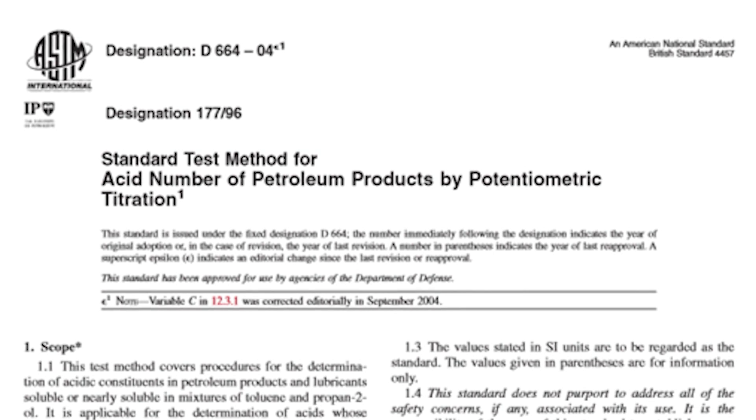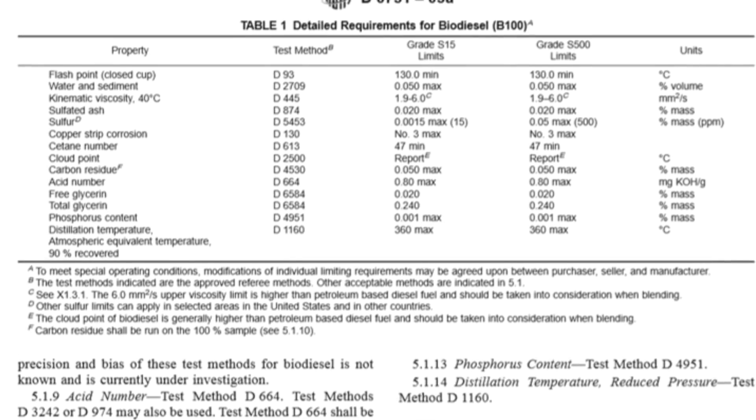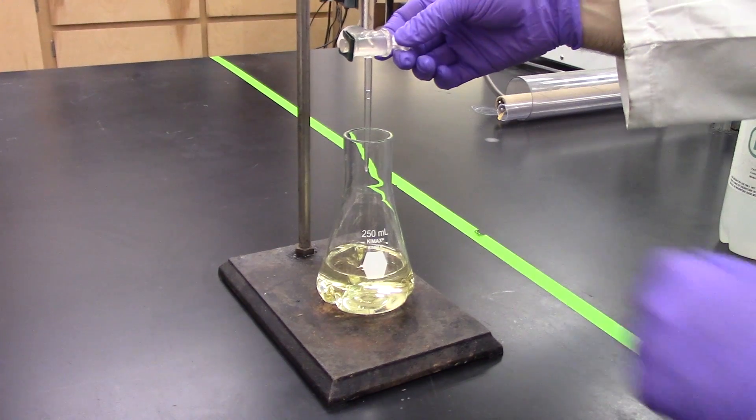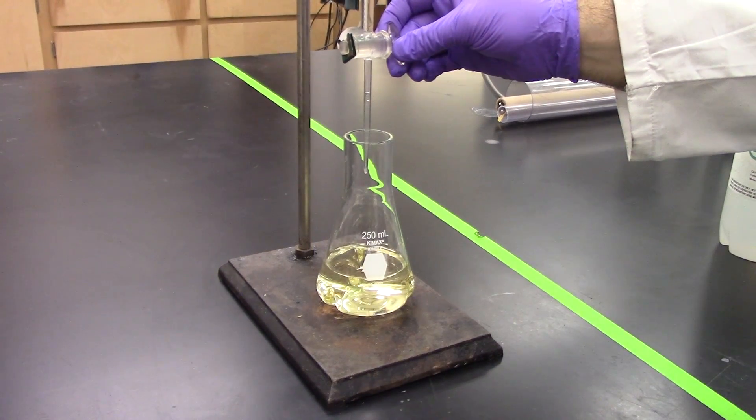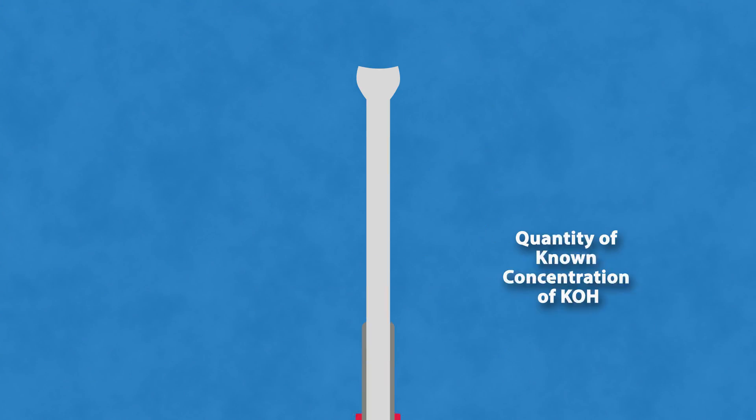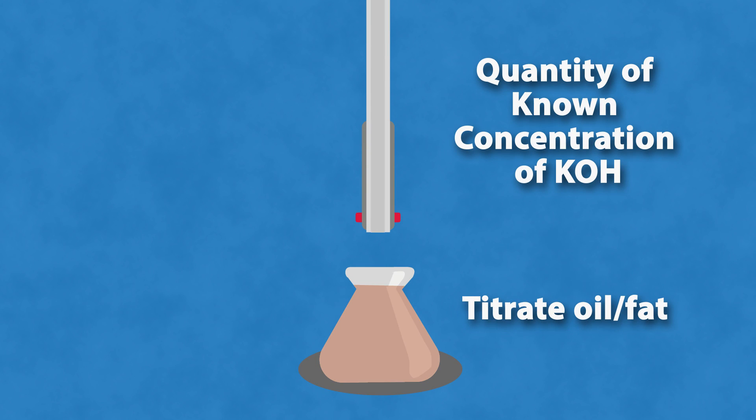According to the ASTM specification, biodiesel can have no more than 5 ppm of sodium and potassium and no more than 0.24% total glycerides in the fuel sample. Titration is a chemical procedure that can be used to obtain this number. The acid value is the quantity of a known concentration of potassium hydroxide consumed by titrating a sample of oil or fat.